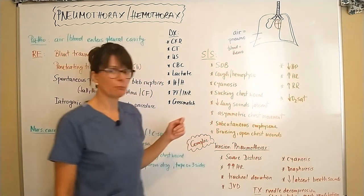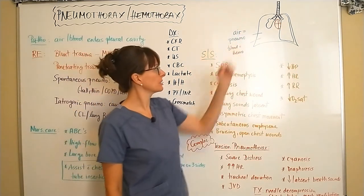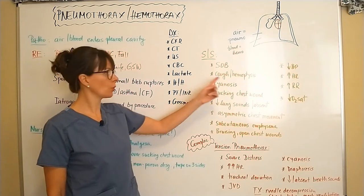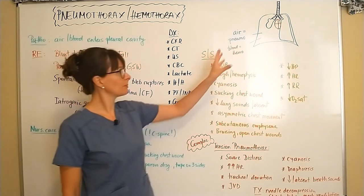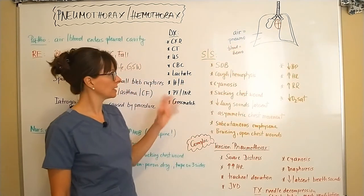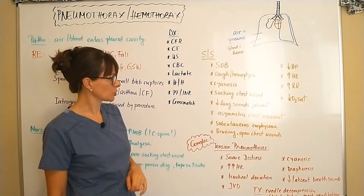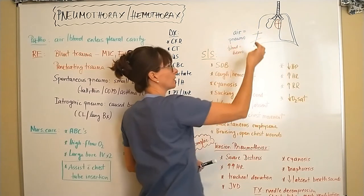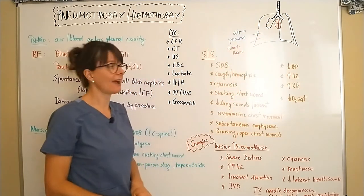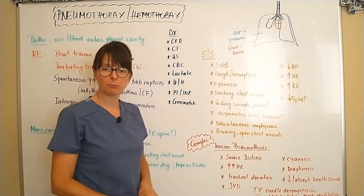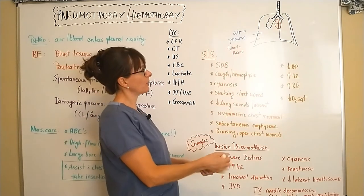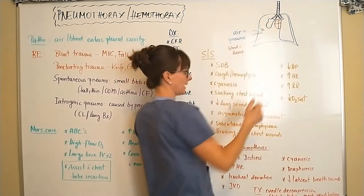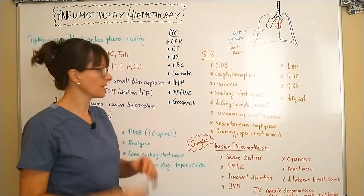Signs and symptoms of both hemothorax and pneumothorax when the lung is deflating include significant shortness of breath, possibly cough or bloody sputum, and cyanosis depending on severity. There might also be a sucking chest wound — if there is a traumatic injury creating an opening in the pleural cavity, air will enter through that wound because of the negative pressure normally present in the lungs, and it typically sounds like it's sucking in the air.